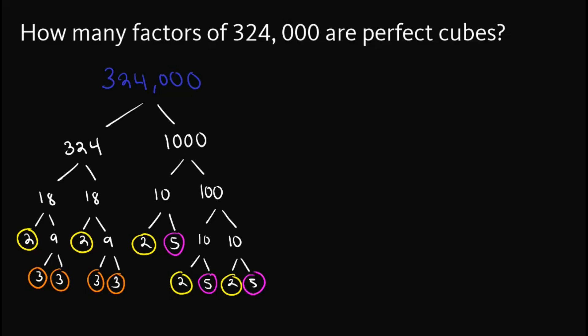And so we can write 324,000 as 2 raised to 5 times 3 raised to 4 times 5 raised to 3.